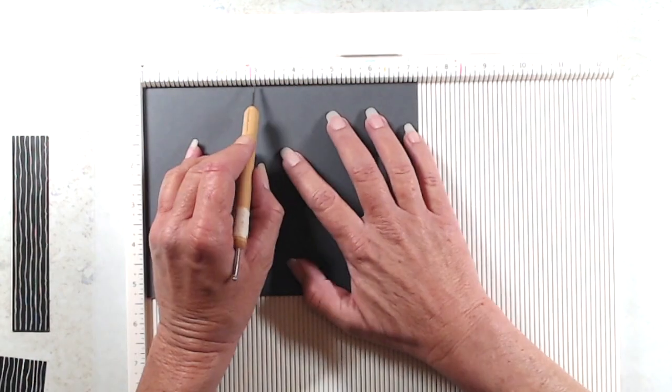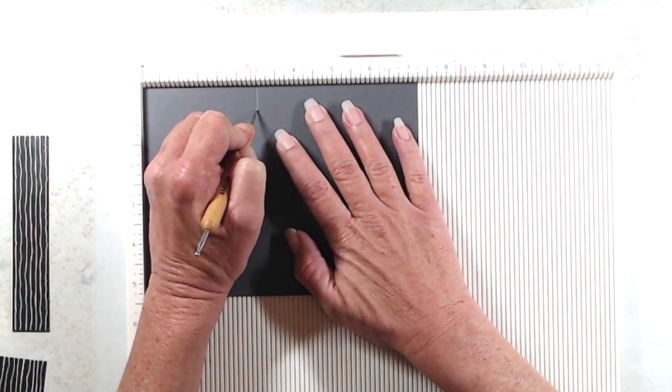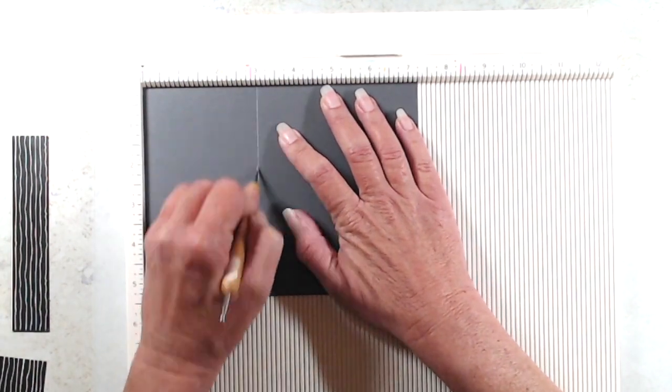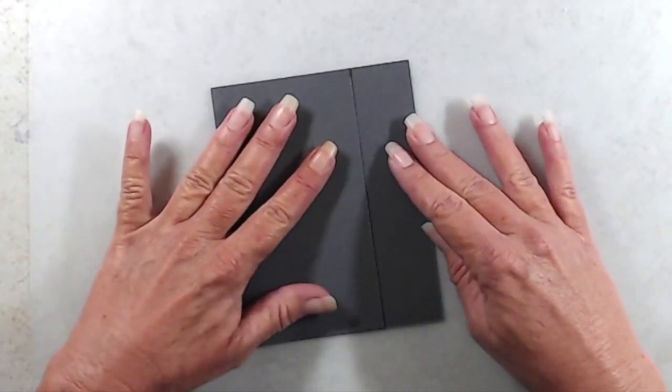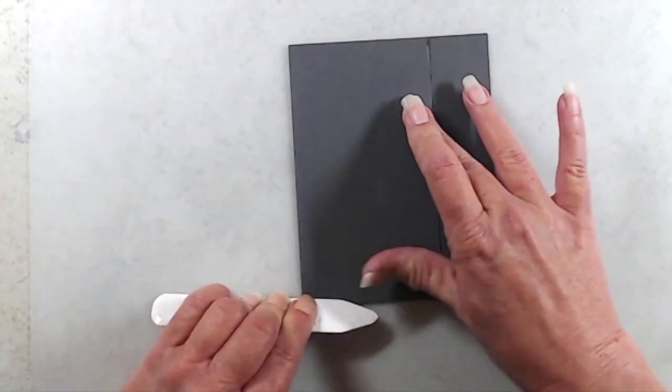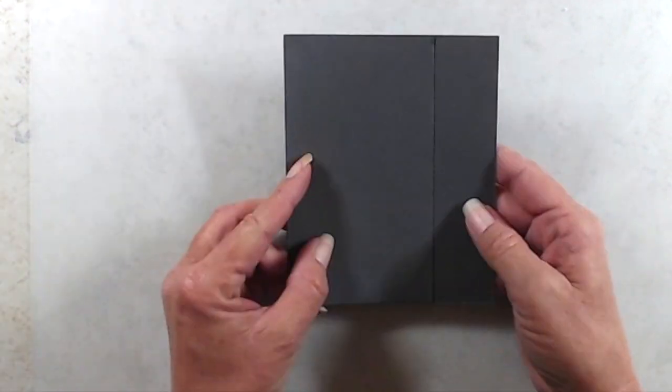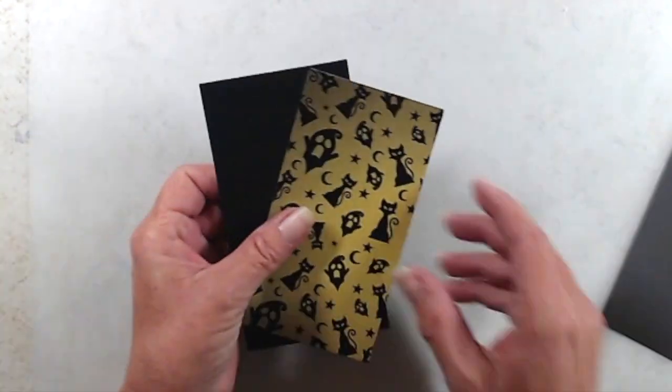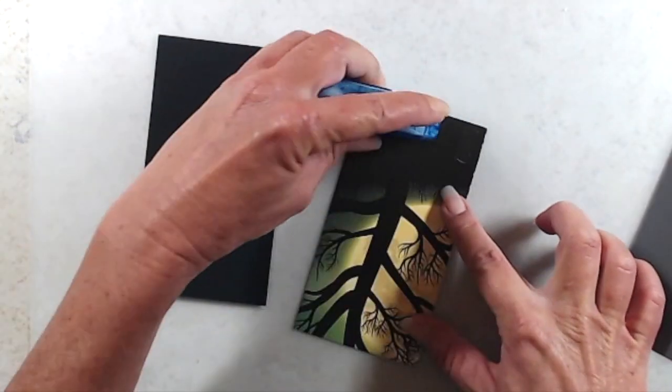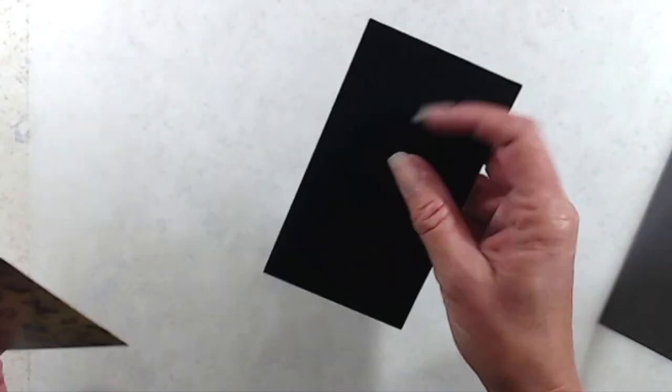For my card base, I used a piece of dark gray cardstock that measures 7 1/4 by 5 1/2, and then I scored that at 3 inches. To put the card together, I had cut a piece of patterned paper from the Haunted Paper Pack to 5 1/8 by 2 3/4, and I used my tape runner to adhere that to a piece of black cardstock that's just slightly larger.